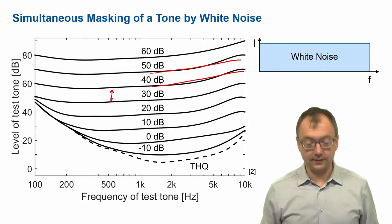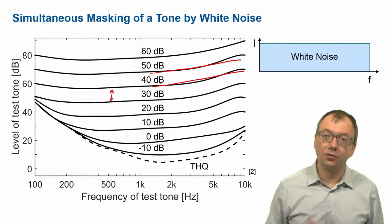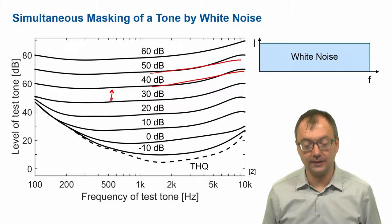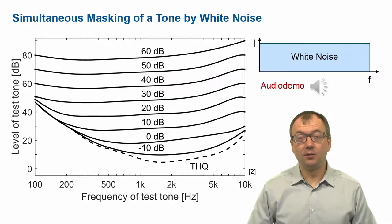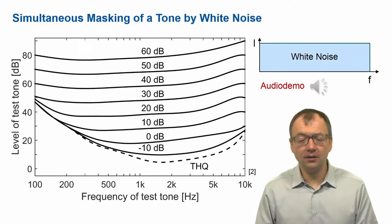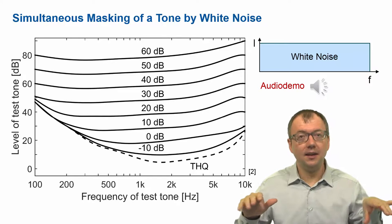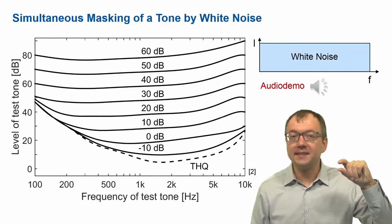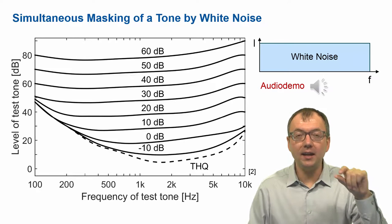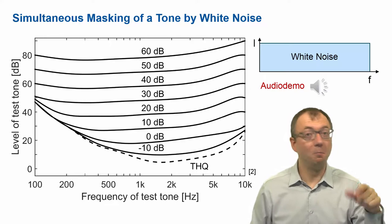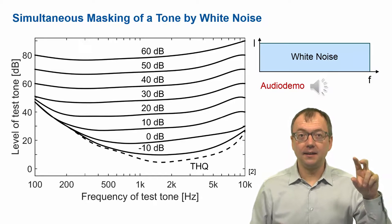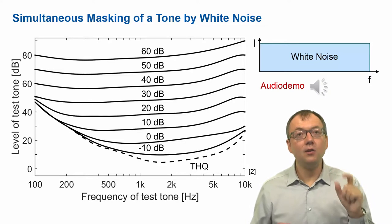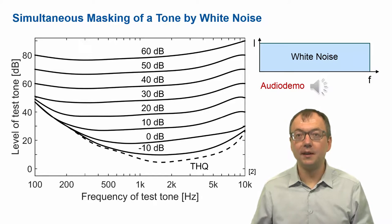A wide noise can mask a tone and increase the threshold of the tone across the whole spectrum — here from 100 Hz to 10 kHz. Let me now demonstrate the effects of masking. I'll play a wide noise and into that noise play a tone, then reduce the level of the tone step by step until you will not hear the tone anymore — it's been masked by the noise. Lastly, I'll play the tone alone; you will hear it's still there, just not audible because of the noise being present.